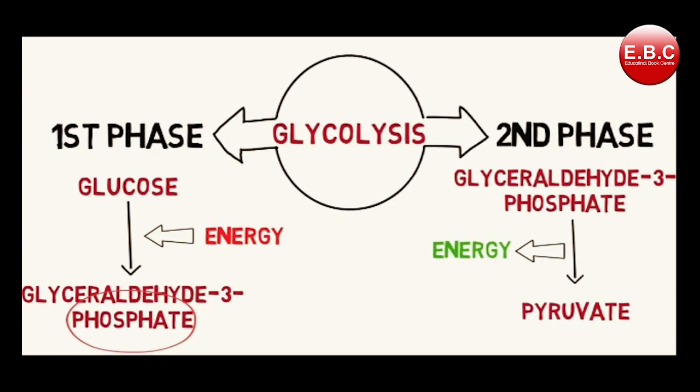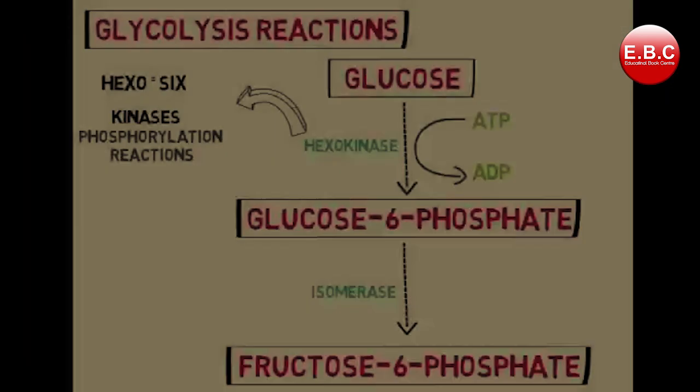The process of glycolysis takes place in two phases. In the first phase, glucose is first converted into two molecules of glyceraldehyde-3-phosphate. Since this conversion involves addition of phosphate, it uses energy instead of producing it — so this phase is also known as the energy investment phase. In the second phase, glyceraldehyde-3-phosphate is converted into pyruvate, and energy is produced — this is known as the energy generation phase.